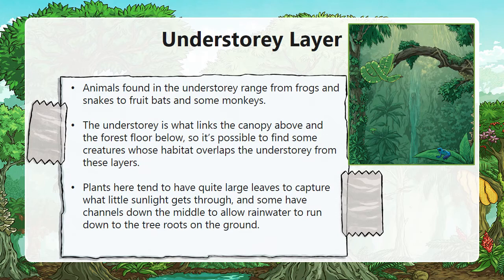Animals found in the understory range from frogs and snakes to fruit bats and some monkeys. The understory links the canopy above and the forest floor below, so it is possible to find some creatures whose habitat overlaps from these layers. Plants here tend to have quite large leaves to capture what little sunlight gets through, and some have channels down the middle to allow rainwater to run down to the tree roots on the ground.